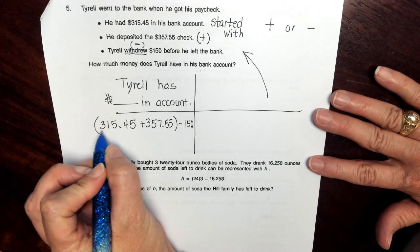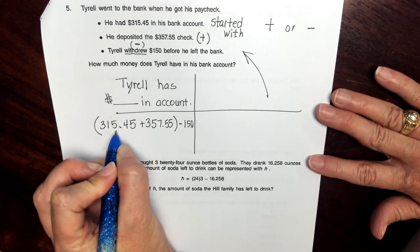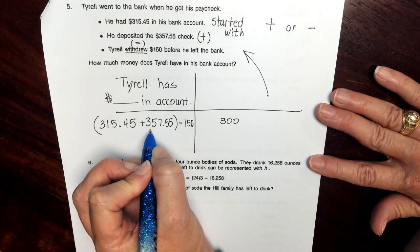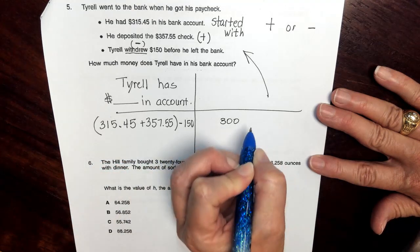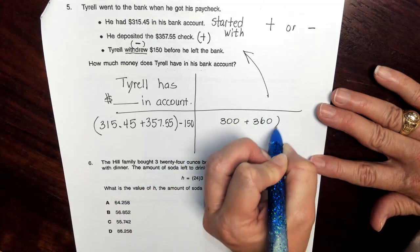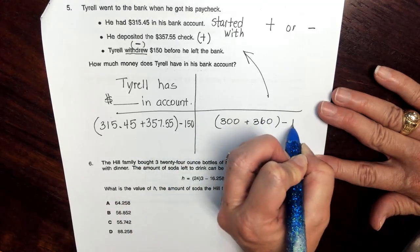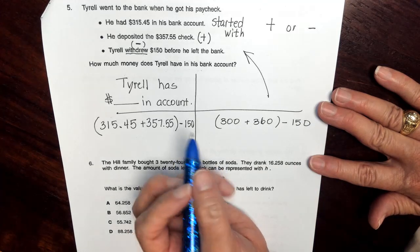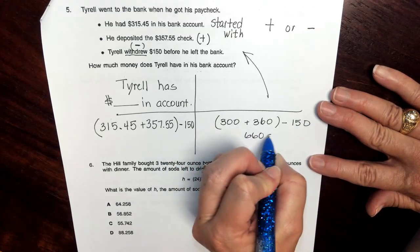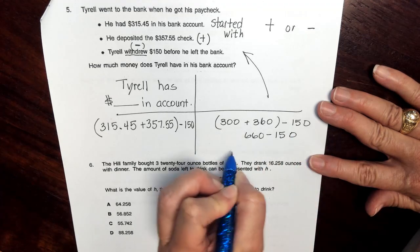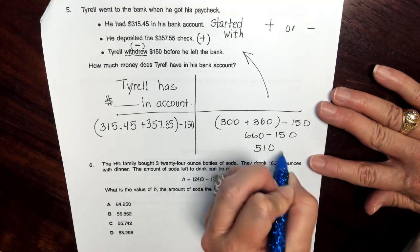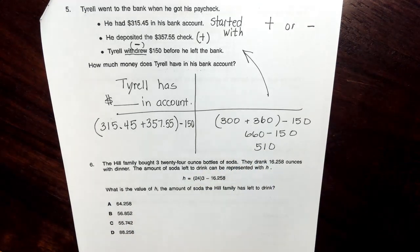Alright, let's make a quick estimate. So I'm going to say this is about $300, and this is about $360. Those are easy numbers to put together. And then we can subtract $150. That's a nice little number. So if I add these together, I get $660 minus $150. And that's going to give me about $510. So my answer should be pretty close to $500.